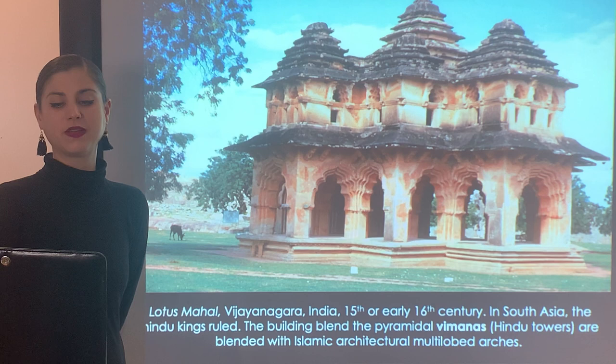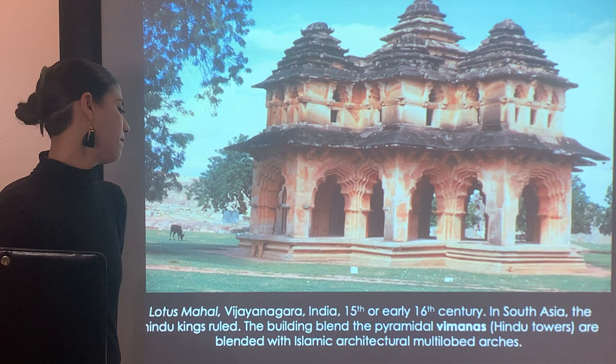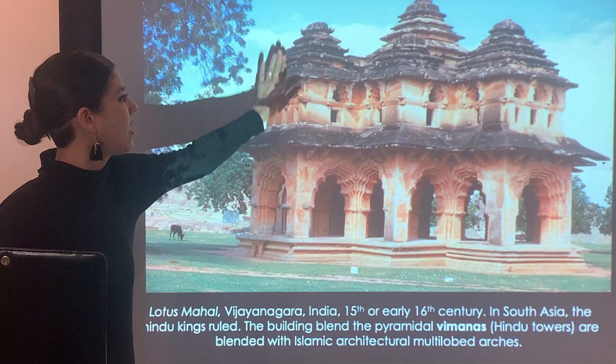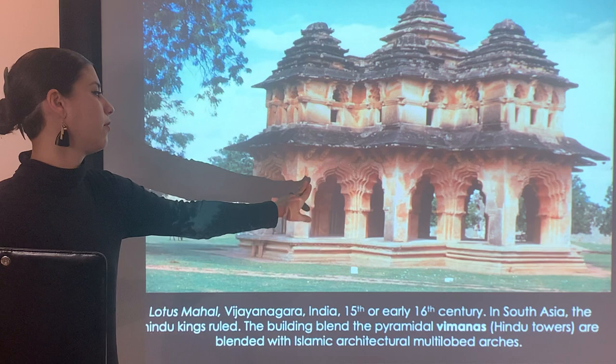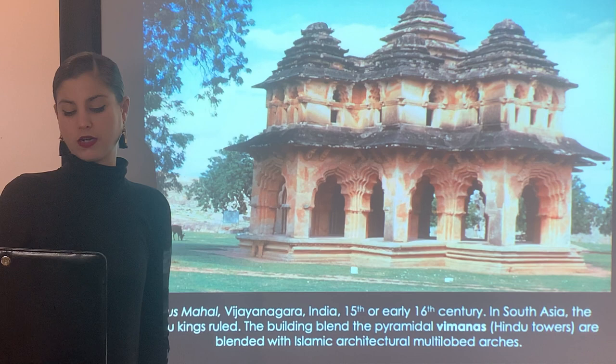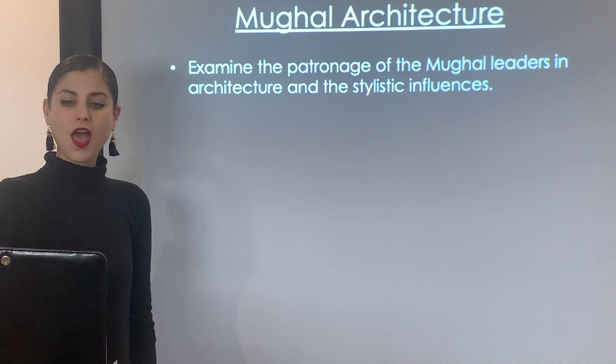The Lotus Mahal, located in India and dating to the 15th or 16th century, was built while Hindu kings were ruling South Asia. The building blends pyramidal Vimanas — the Hindu tiered towers — with Islamic architecture. We can see those multi-lobed arches that are so unique to Islamic architecture we had been looking at in previous chapters.